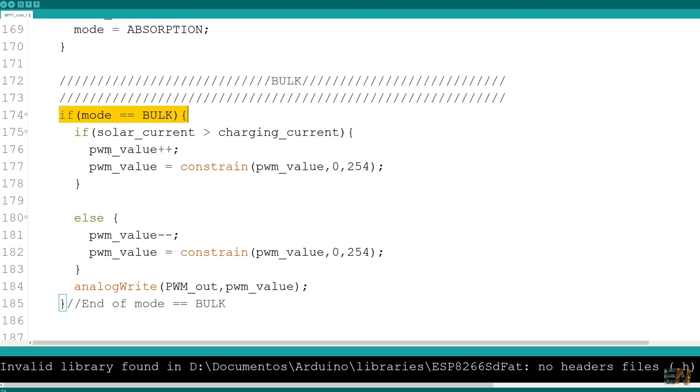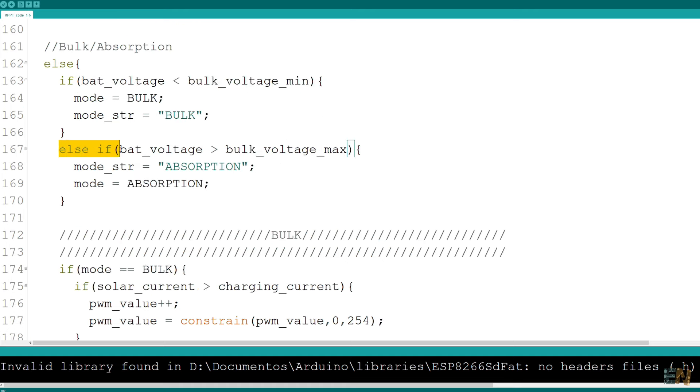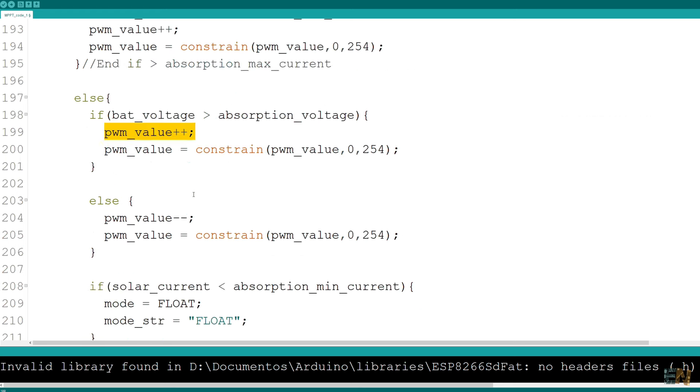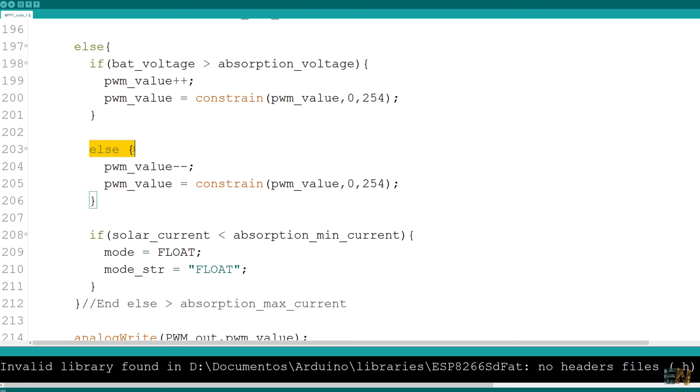Ok, so when we are into bulk mode, we control the current and we keep it under the limit defined before at the beginning of the code. When the voltage will reach the maximum bulk value, we switch the mode to absorption. Here we control and keep the voltage at the same value till the current drops to the minimum value. Once we reach that value, we switch to float mode and here we keep a different and lower constant voltage at a very low current flow.